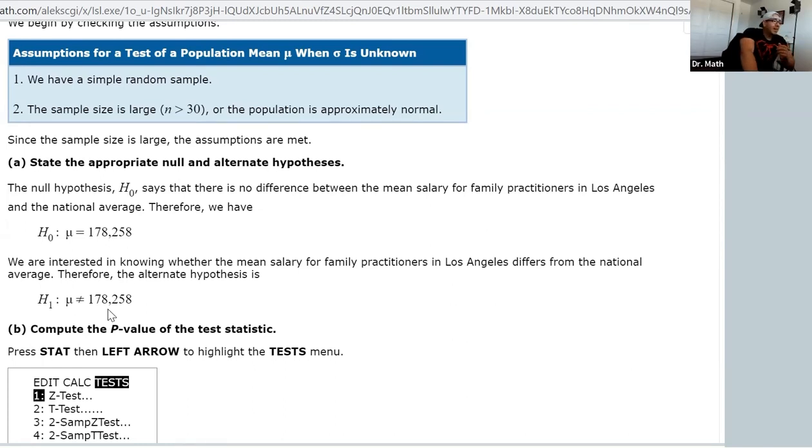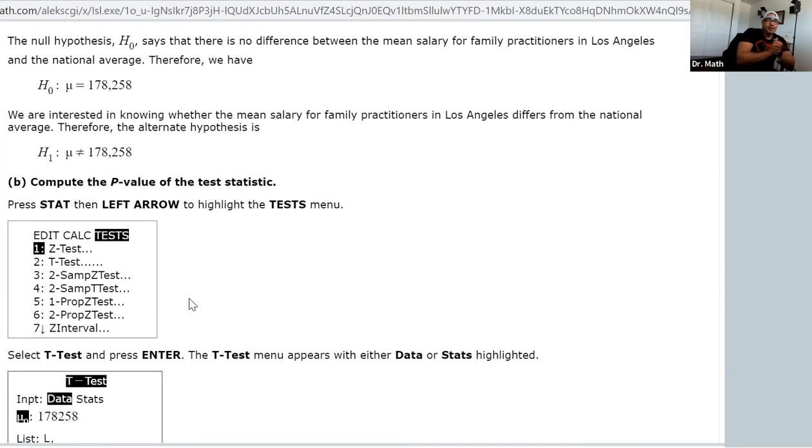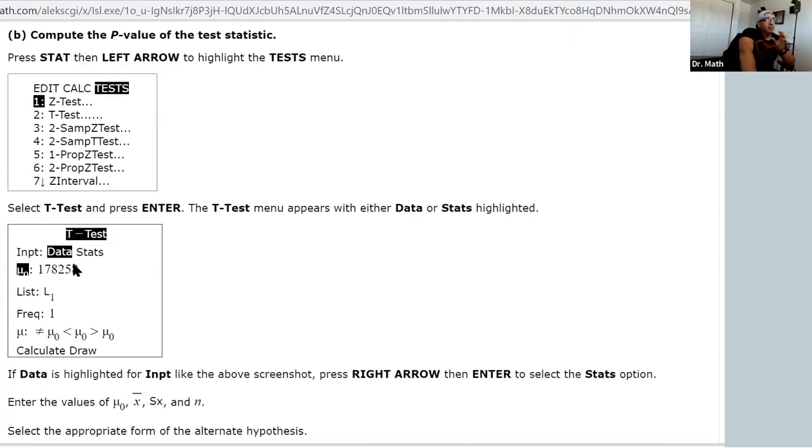We're going to make this really short and fast and we're going to use the p-value approach, where all we do is grab that p-value and compare it to alpha. So we're going to go to STAT. The steps to get here is you go to STAT, go over to TESTS, and we're going to go down to where it says T-Test.